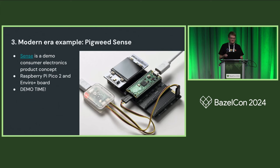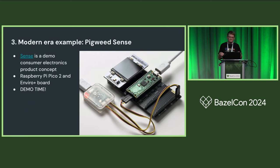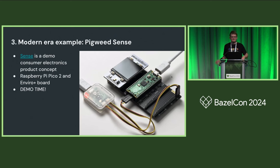An example project from the modern era showing these APIs in use is Pigweed Sense — a demo consumer electronics product concept that Pigweed developed as part of the Raspberry Pi Pico 2 launch this summer. The RP2350 microcontroller and Pico 2 board are at the center of it, and Pigweed Sense is a toy product built for the Raspberry Pi Pico 2.